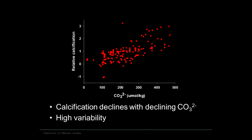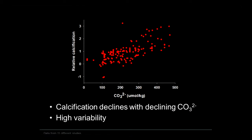Looking at a range of studies examining calcification rates as a function of carbonate ion, we get a pattern with a general decline in calcification as the external carbonate ion decreases, but also a lot of scatter — some studies show essentially no change in calcification, while others show dissolution at the same external carbonate ion concentration.